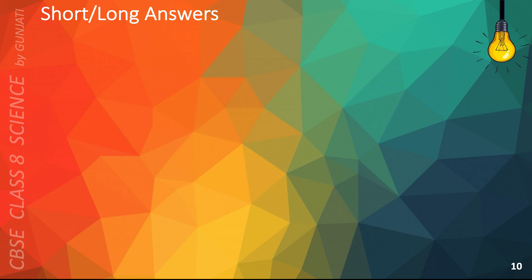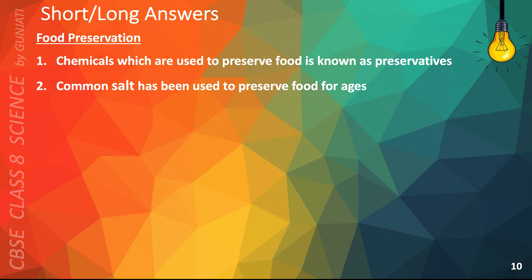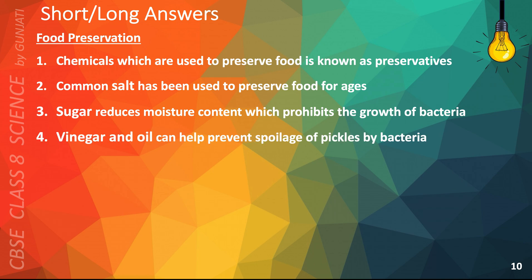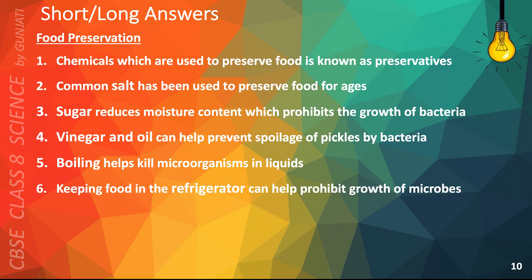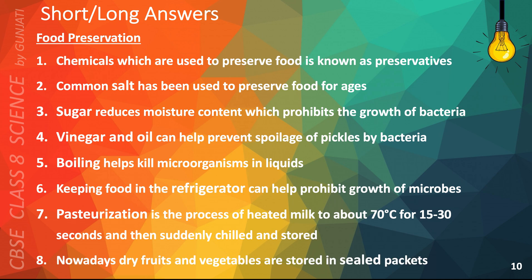The following points will help you answer questions on food preservation: Chemicals which are used to preserve food are known as preservatives. Common salt has been used to preserve food for ages. Sugar reduces moisture content which prohibits the growth of bacteria. Vinegar and oil can help prevent spoilage of pickles by bacteria. Boiling helps kill microorganisms in liquids. Keeping food in the refrigerator can help prohibit the growth of microbes. Pasteurization is the process of heating milk to about 70 degrees Celsius for 15 to 30 seconds and then suddenly chilled and stored. Nowadays dry fruits and vegetables are stored in sealed packets.